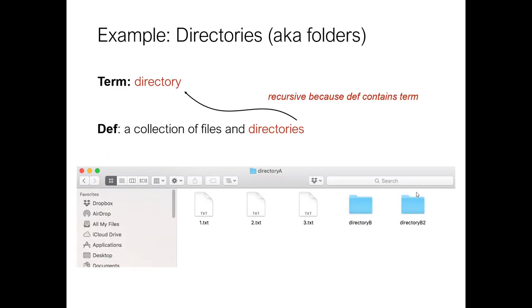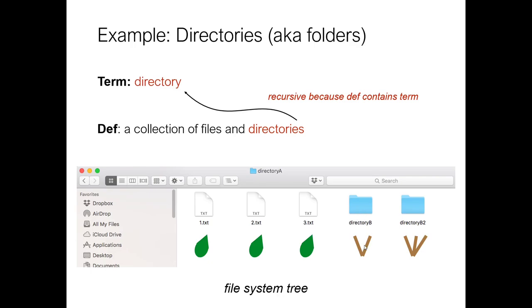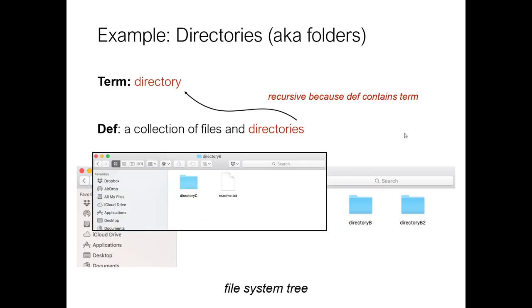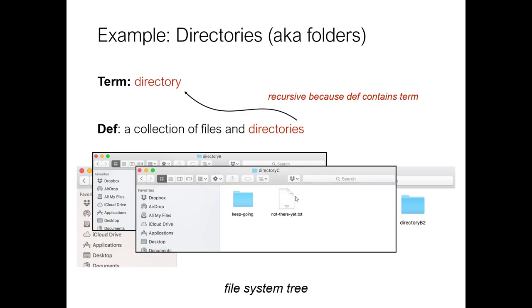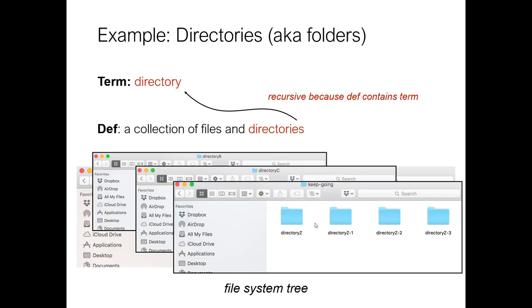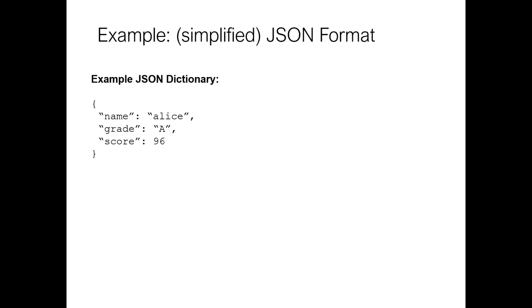File systems: we've been working with folders and directories all semester. Directories are in fact recursive data structures. The definition of a directory is a collection of files and directories. Here I have an example from Finder — directory A containing two other directories B and B2, and some files. Files will be leaves — they cannot contain more files or directories. Directories are like the branches — they can contain other files and other directories. Directory B contains directory C and a file. Directory C can contain other files, and so on all the way down.